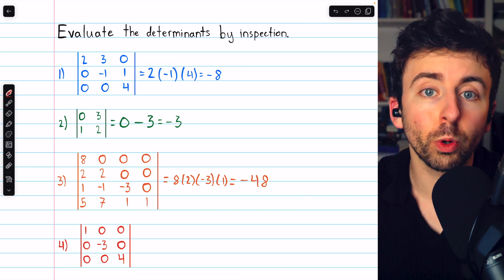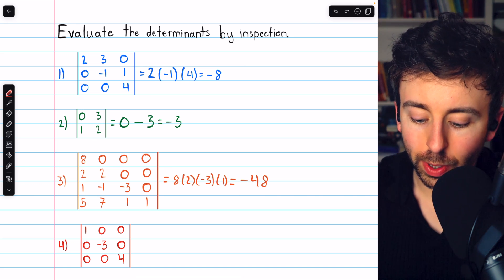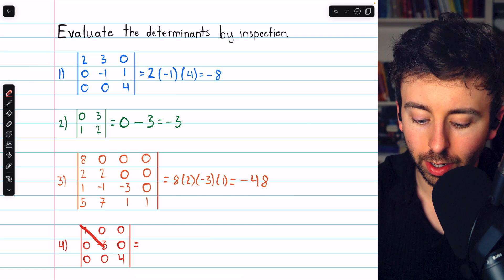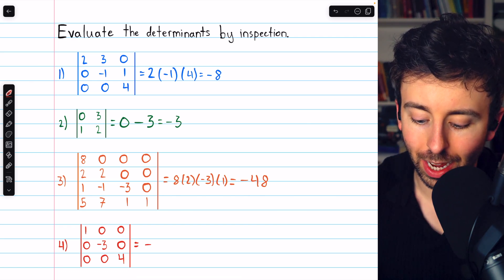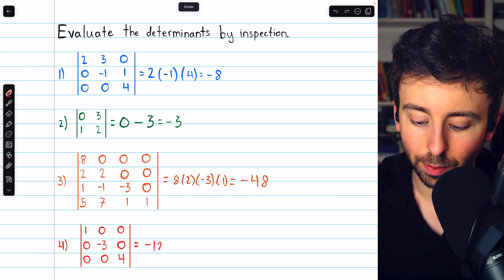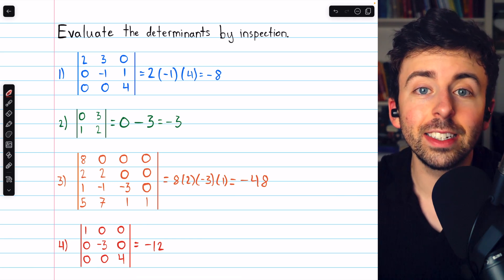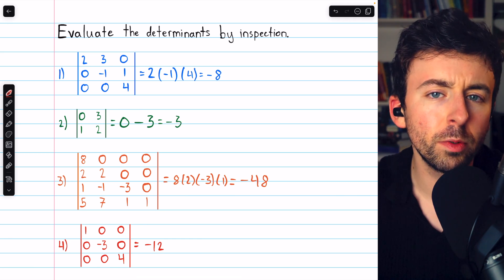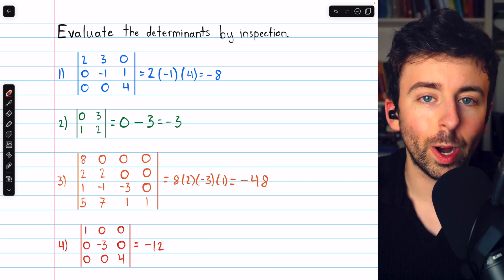but it is still considered a triangular matrix, and so again, its determinant is just the product of its diagonal entries, which at a glance we see is negative 12. That's how to find the determinant by inspection for 2x2 matrices and for triangular matrices.